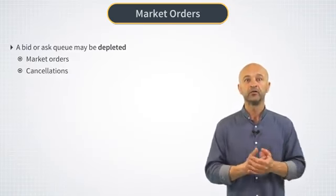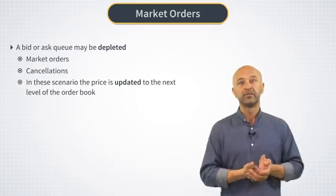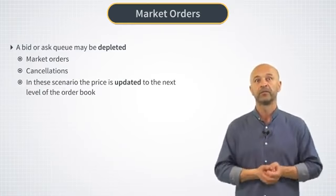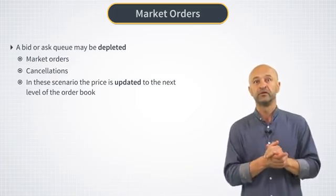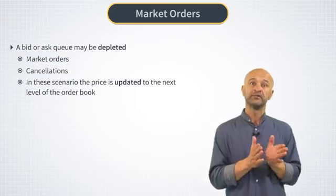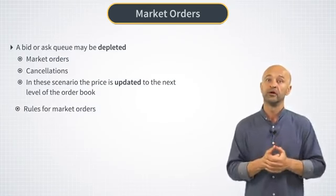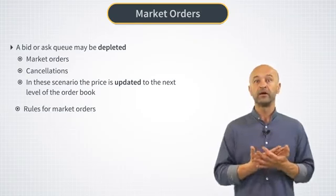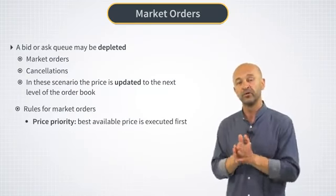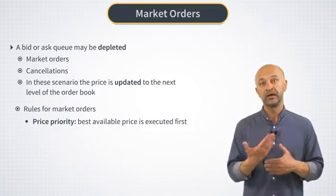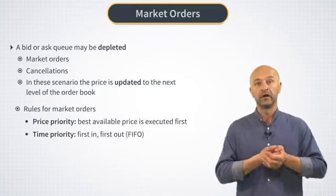It might happen that as a result of market orders and cancellations, a bid or ask queue will be depleted. In this case, the price will simply be updated to the next price level. This constitutes the actual price moves of the stock, and as shown in tables in the previous video, this happens all the time — many thousands of times a day. When a sell market order arrives, buyers are served according to priority rules: price priority and time priority. The price priority rule is that the best price is always executed first, and the time priority is the FIFO rule of the queue.